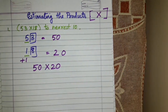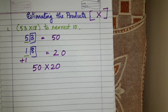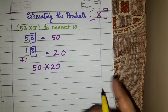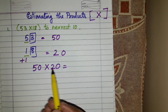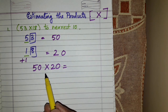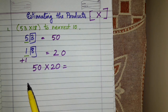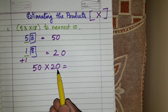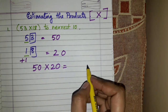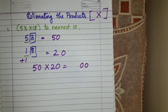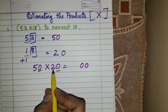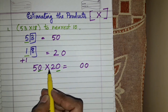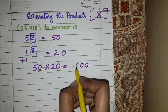Now let's take out the product. You do not have to go into detail — just do direct multiplication. Count the number of zeros at the end of each number: there is one zero here and one here, so in the answer write two zeros. Now what is left is 5 into 2, which is 10. So the answer is 1000.